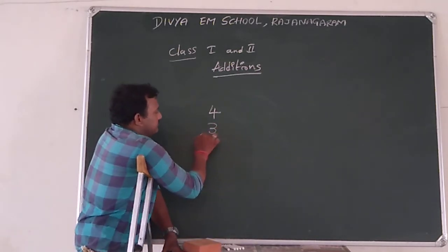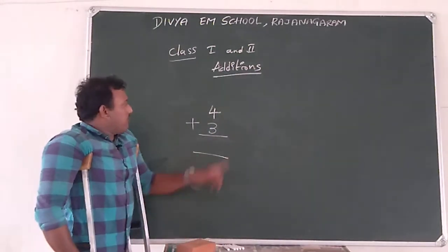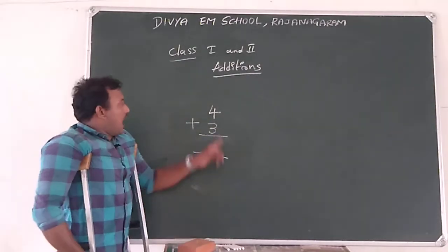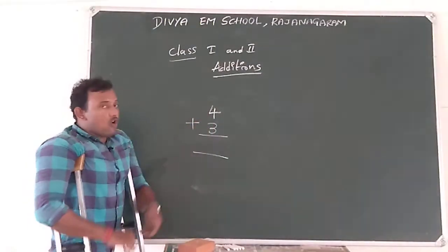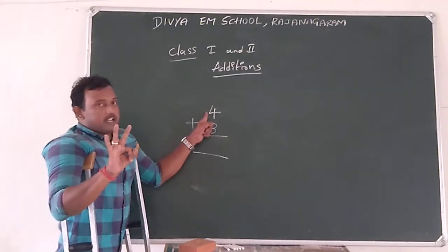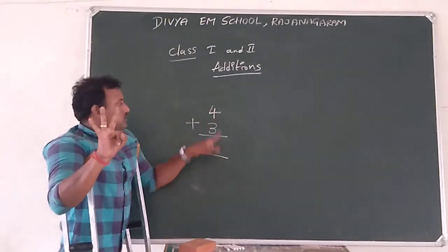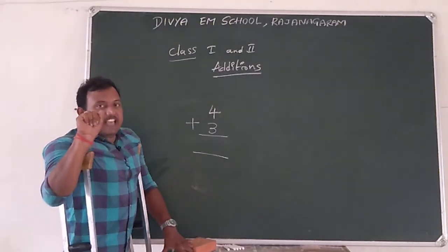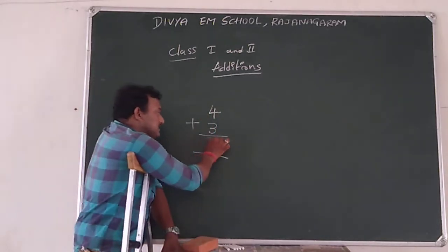4 plus 3. The first number is 4, keep it in mind. After that, the second number is 3. So after the 4, we count the 3 numbers. Take 3 fingers. We need to add the 3 fingers to the 4. After 4, I am going to count: 5, 6, 7. So when we add 4 to 3, the total is 7.